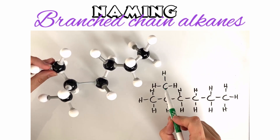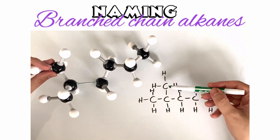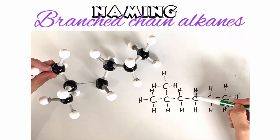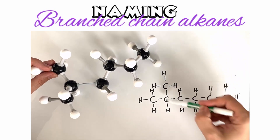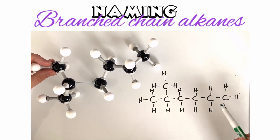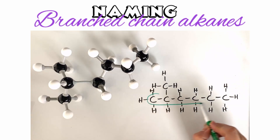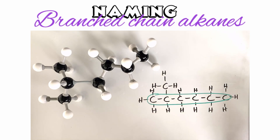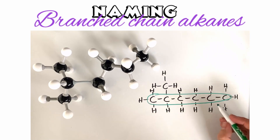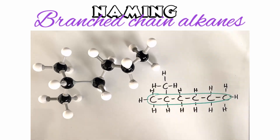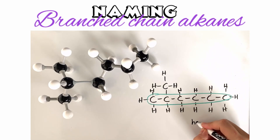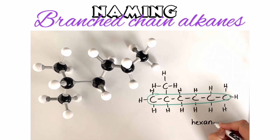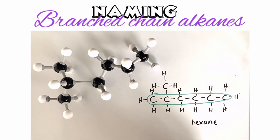Check it both ways just in case: one, two, three, four, five, six — and starting from the other carbon it's still one, two, three, four, five, six. So it doesn't matter which end you start from. This chain is our parent chain; it has six carbons, so the ending of our name is going to be hexane — all single bonds, so it is an alkane.